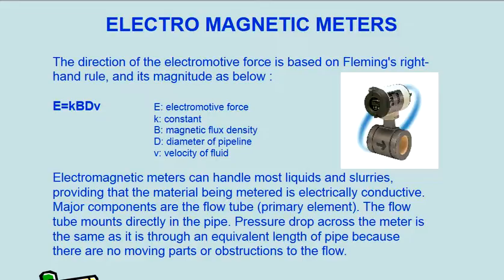Electromagnetic meters can handle most liquids and slurries, providing that the material being metered is electrically conductive. Major components are the flow tube primary element. The flow tube mounts directly in the pipe.